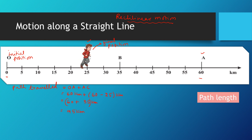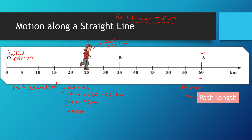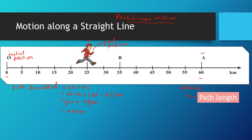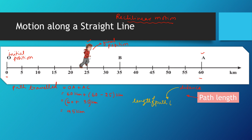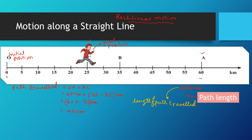This length of path traveled — that is the path length — is called distance. So what is distance? Distance is the length of the actual path traveled by a body or a person.